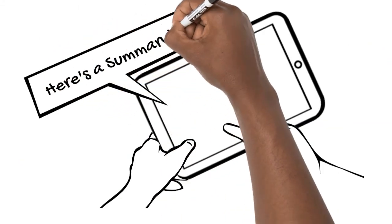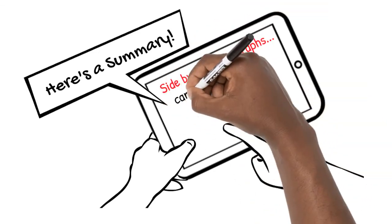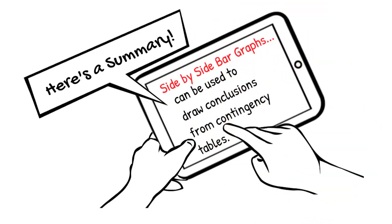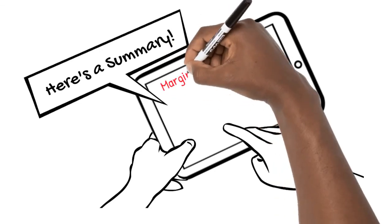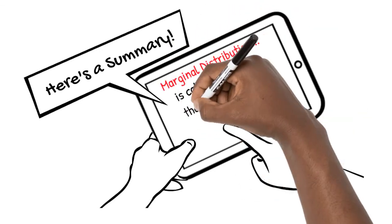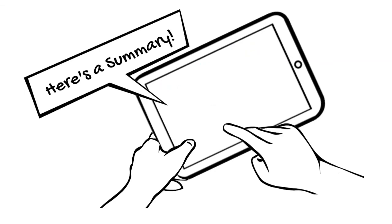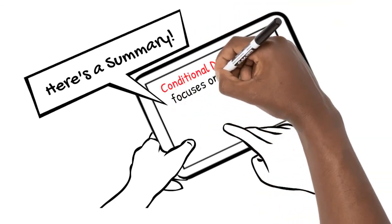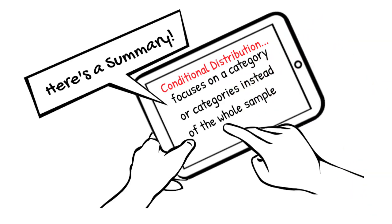Here's a summary of what we've learned. Side-by-side bar graphs can be used to draw conclusions from contingency tables. Marginal distribution is calculated from the margins of a contingency table. Conditional distribution focuses on a category or categories instead of the whole sample.